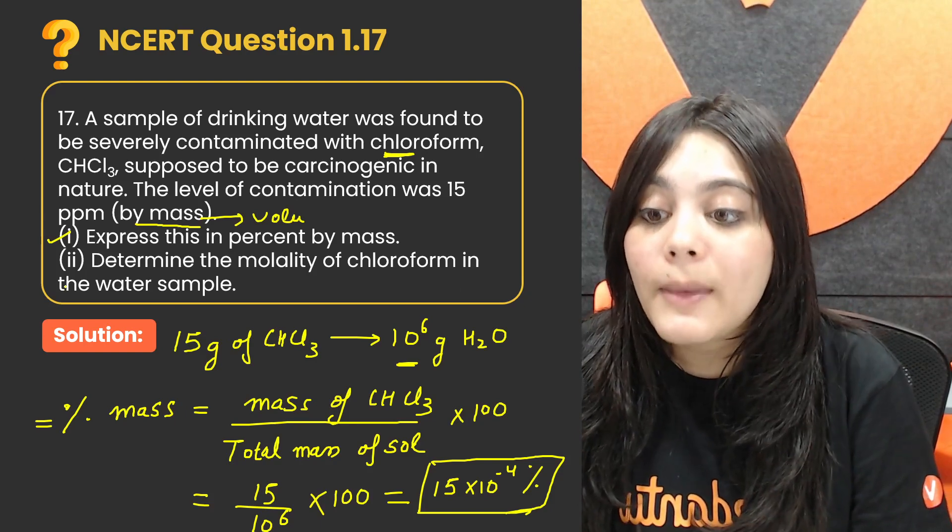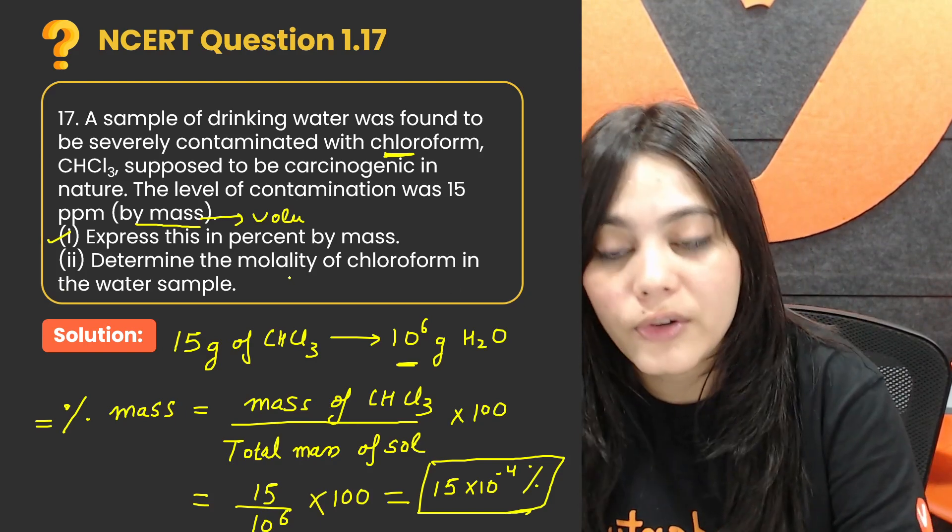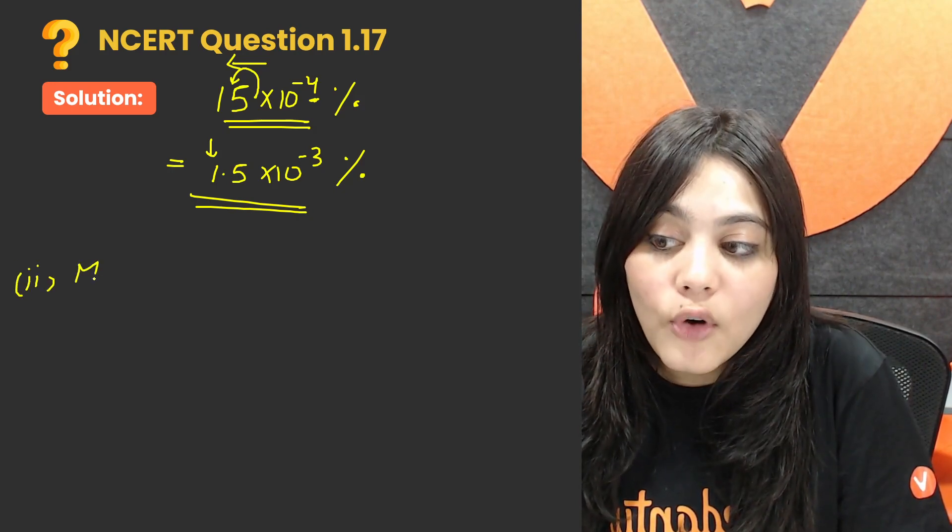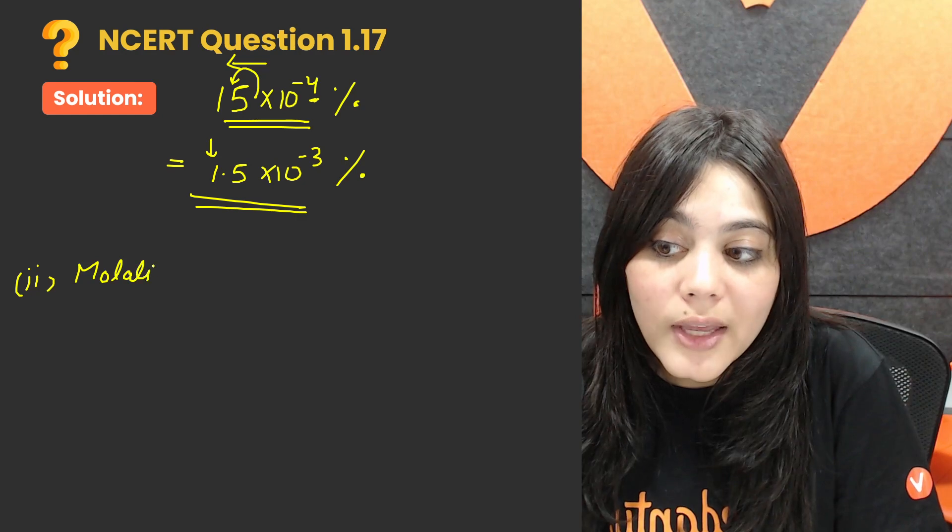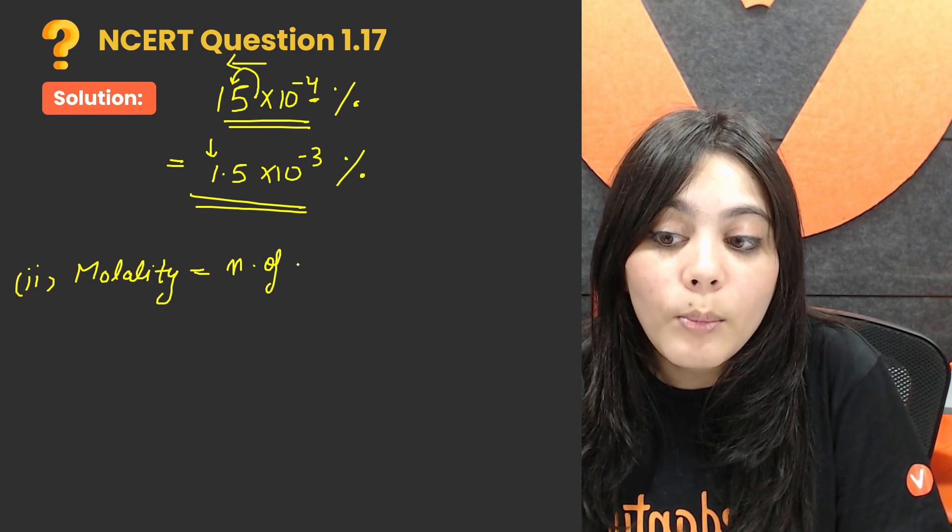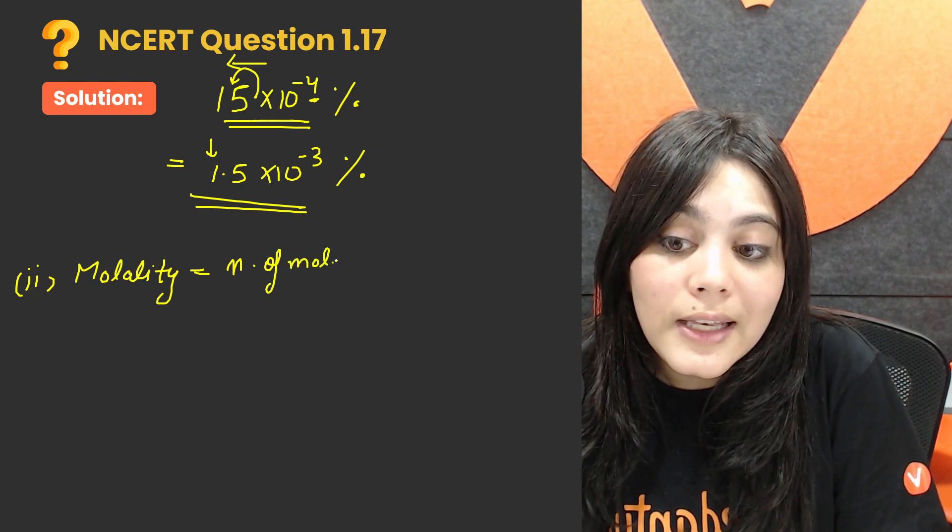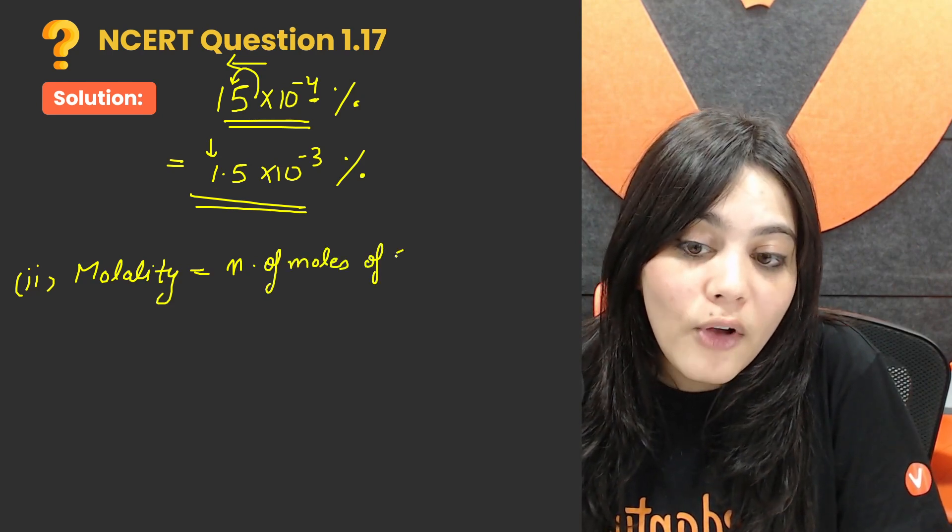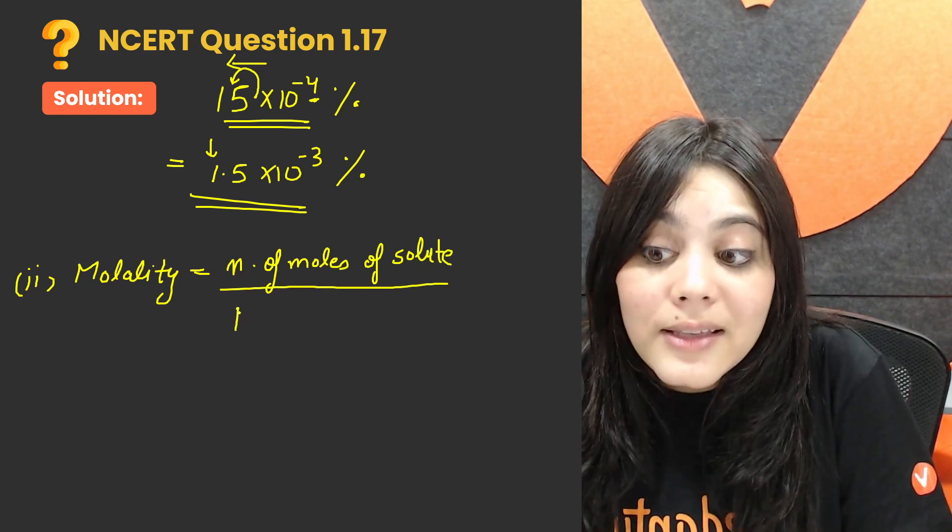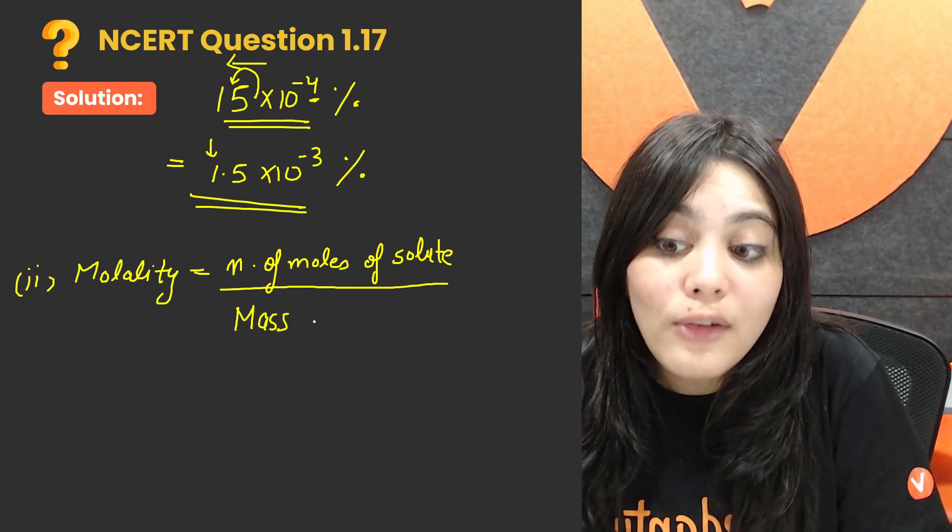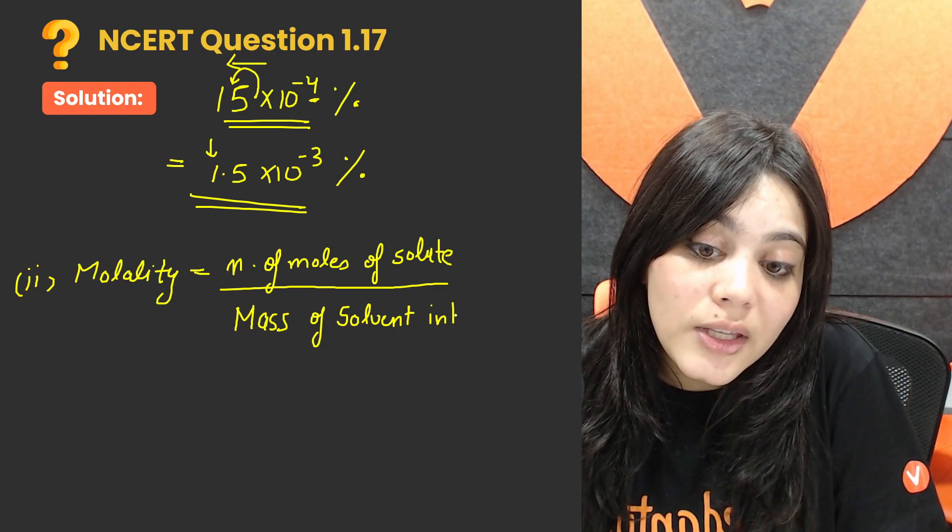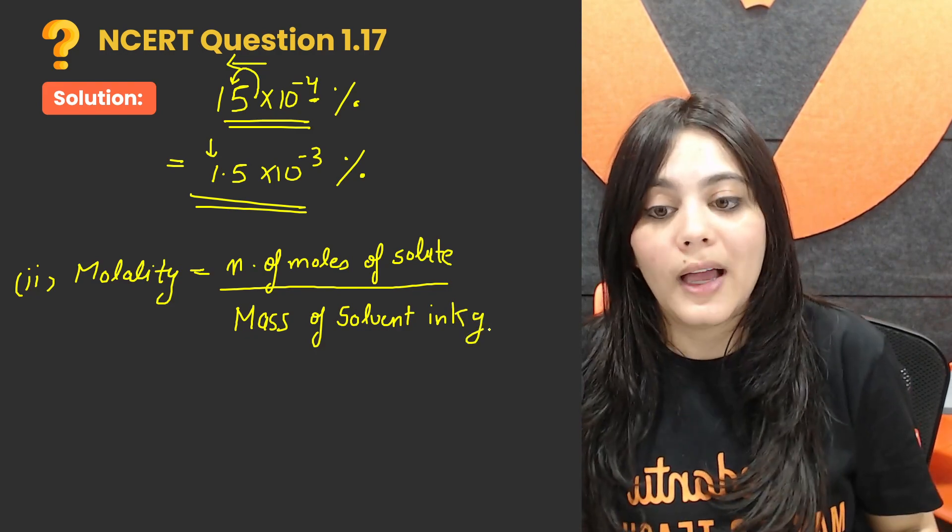So our first express in percent by mass is done. Second is, determine the molality of chloroform in the water sample. So second is molality. Now molality formula you need to know. What is the formula? The number of moles of solute upon mass of solvent in kg. This is the formula of molality.